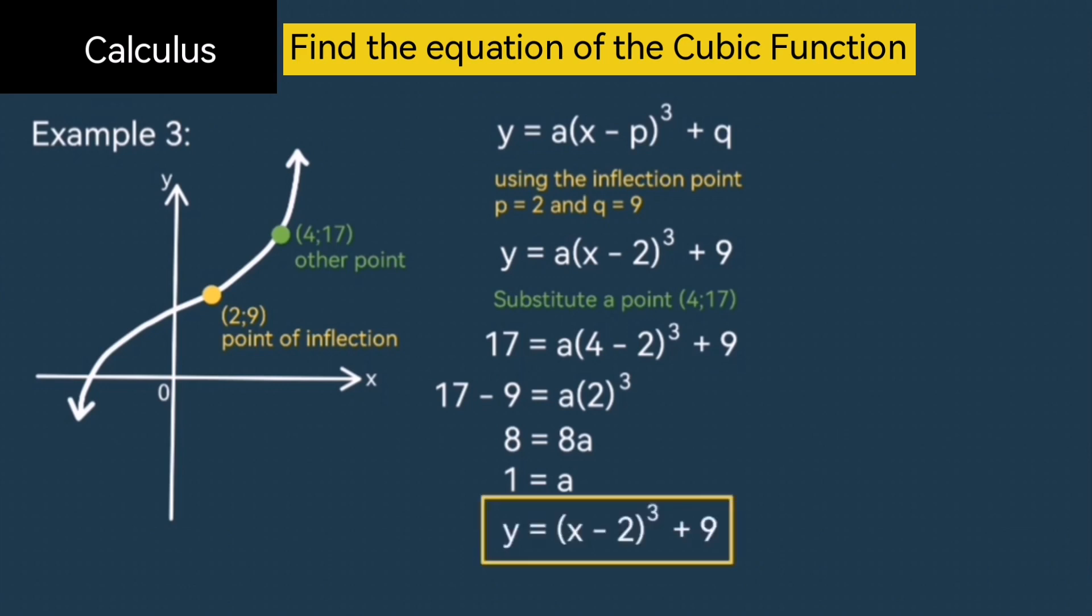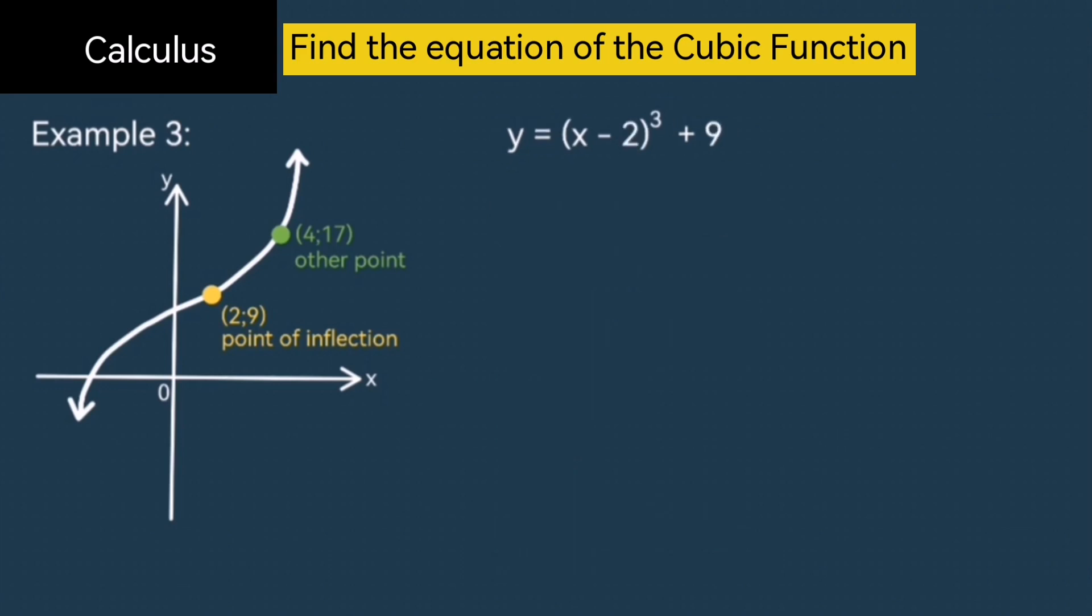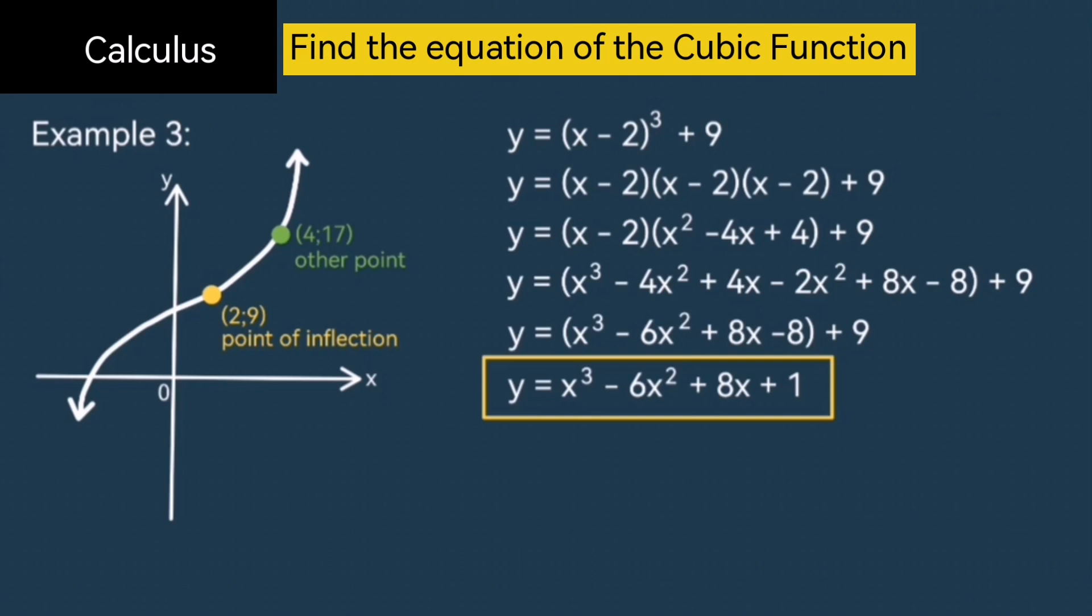Now, this is the equation of the function. But this is in the inflection point form, not the standard form. To get it into the standard form, you just have to multiply out. So x minus 2 multiplied by itself 3 times, and then if you plus 9 at the end, you end up with x cubed minus 6x squared plus 12x plus 1. And that's the equation for the function.